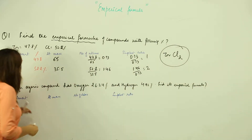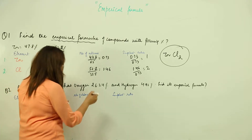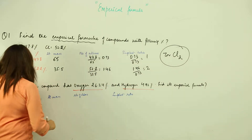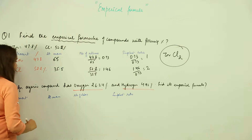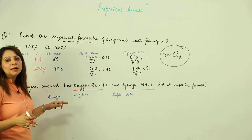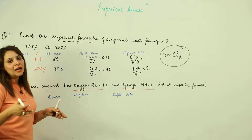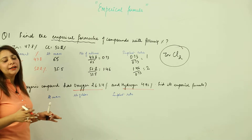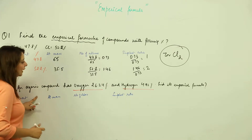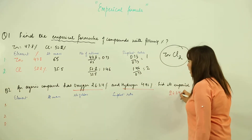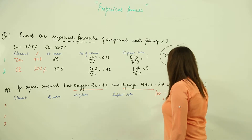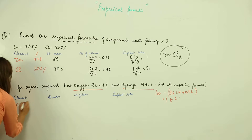For the second example, we have an organic compound containing hydrogen and oxygen, and we need to find its empirical formula. No percentage of carbon is given, but since all organic compounds must contain carbon, we find it by subtracting the given percentages from 100. Oxygen is 26.24% and hydrogen is 4.92%.